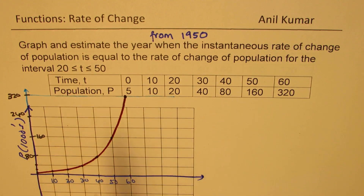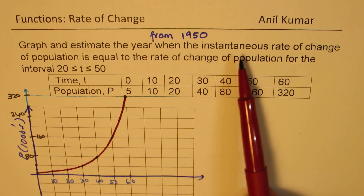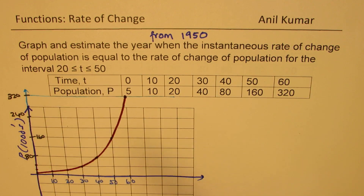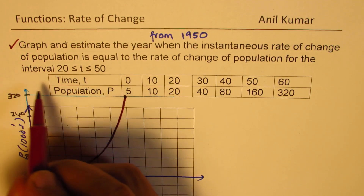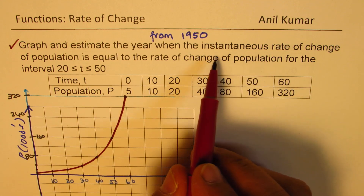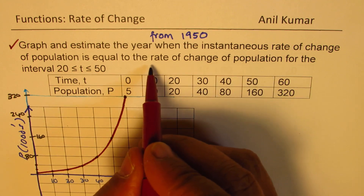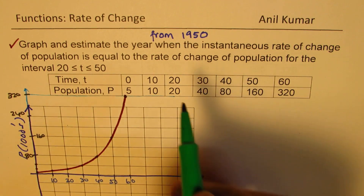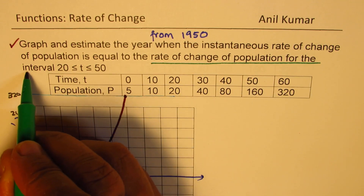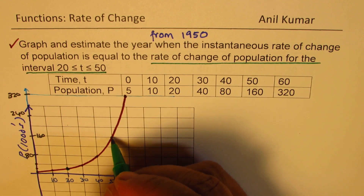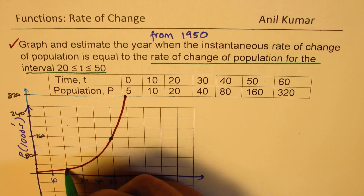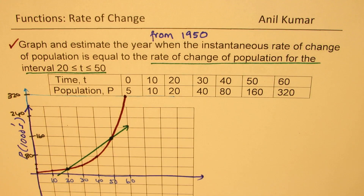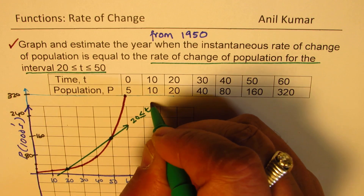The graph is now complete. The question says to graph and estimate the year when the instantaneous rate of change of population is equal to the rate of change for the interval from 20 to 50. So we connect the points at T=20 and T=50 — the slope of that line gives the average rate of change for that interval.